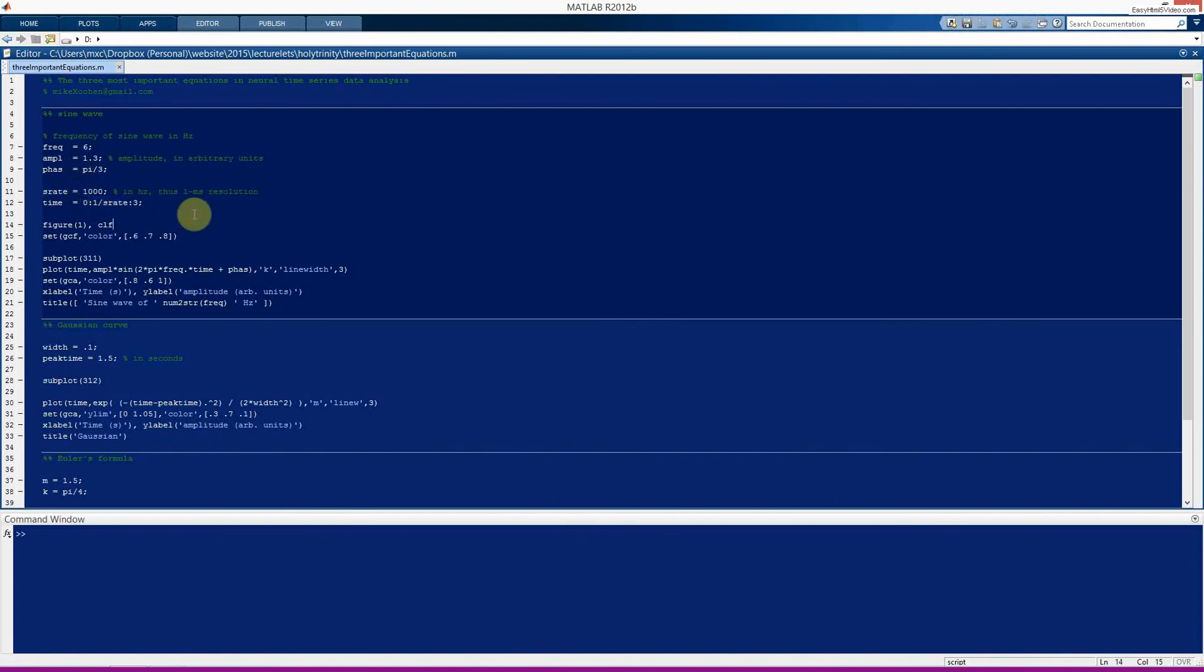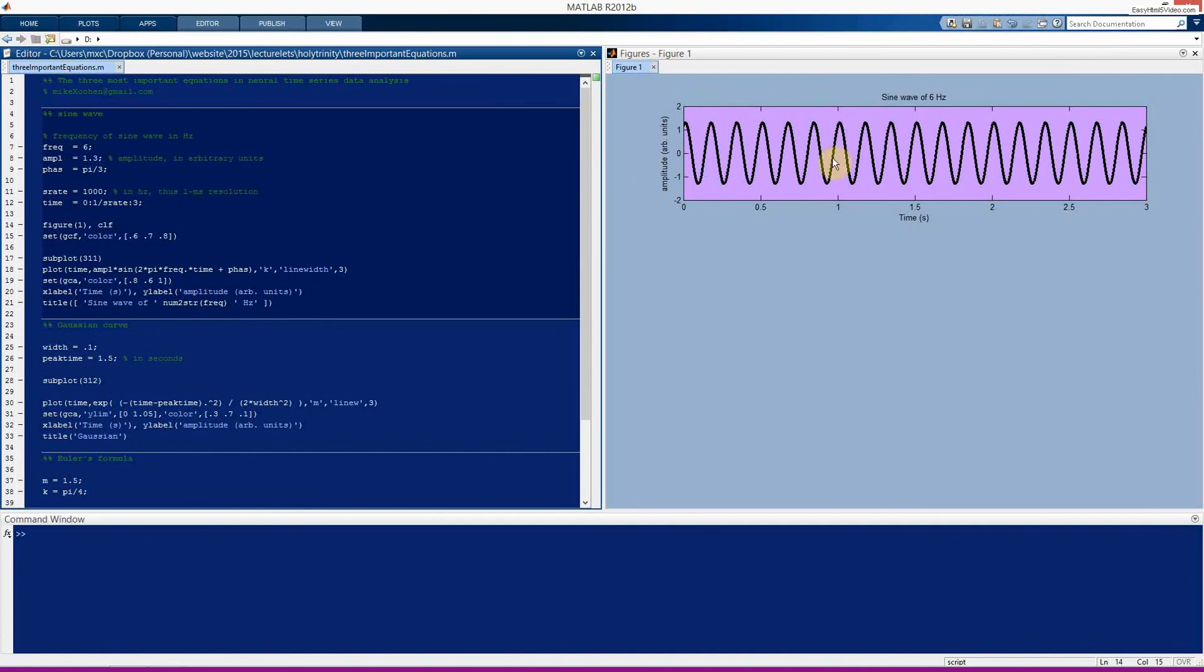So here's what it looks like. Not surprisingly, it looks like what you would expect a sine wave to look like. I have some other additional color changes here just so you can see how to change some things in the figure and in the axis and so on. But these are all not necessary. This is the really important part of this code here.